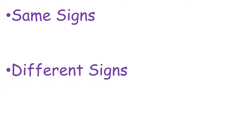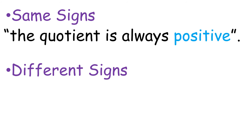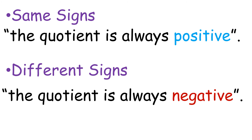Now that you have learned how to solve dividing integers using the concept, I will teach you how to solve this using the rules, as it is faster and more organized. There are 2 rules for dividing integers. First is same signs, and the second is for different signs — almost the same rule as with multiplication. If the signs are the same, the quotient is always positive. For different signs, the quotient is always negative.